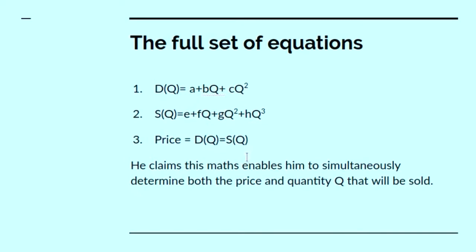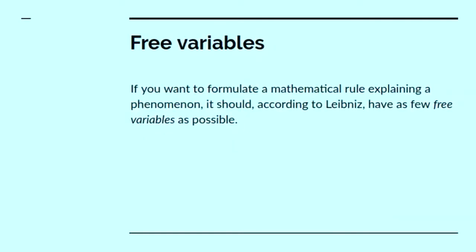And he then says the equilibrium is given by dq equals sq. And he claims that his maths enables him to simultaneously obtain the price that will obtain and the quantity that will be sold. Well, just as a piece of deduction, that's fair enough. But note that he's got seven free variables. A, b, c, e, f, g and h.